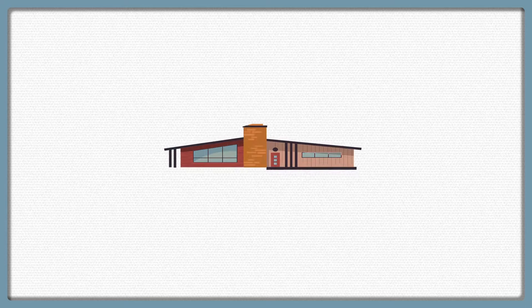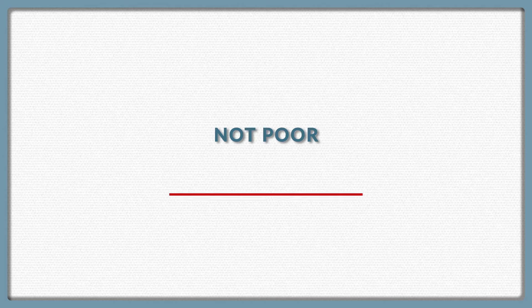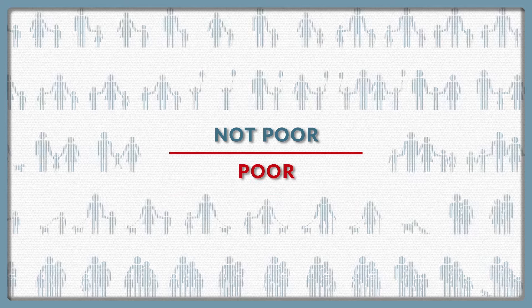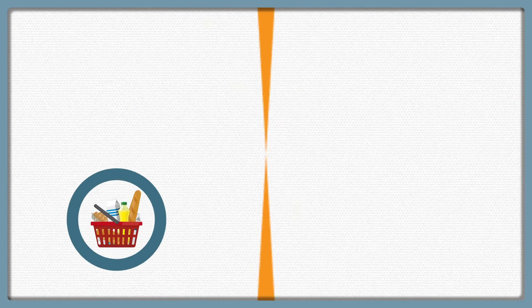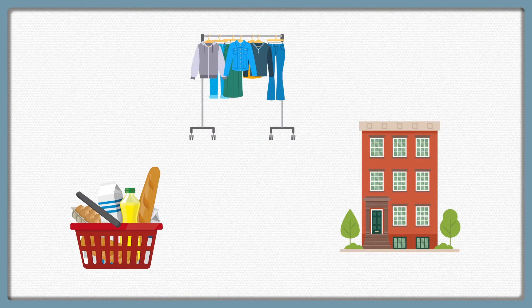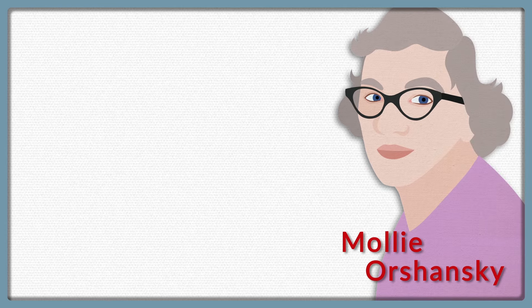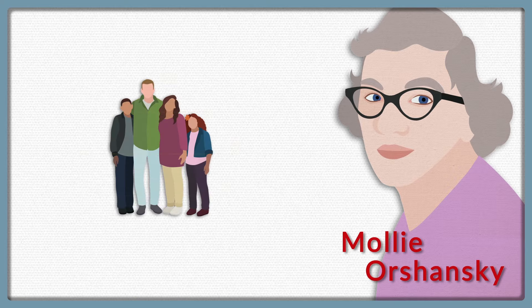In the 1960s, when the government began developing a poverty measure, they needed to decide under what level of income someone would be considered poor. Ideally, they would have had detailed information about the costs of keeping different sizes of families fed, clothed, and sheltered, along with all the other expenses households have. But that kind of information just didn't exist. So Molly Orshansky, a government economist and statistician, began looking for a way to figure out how much money it took for families to get by, and she wanted it to be based on some real measure of what families had to pay for the things they needed.